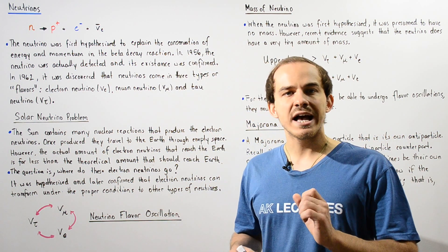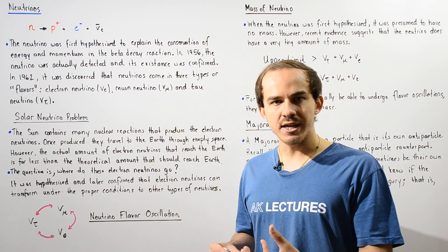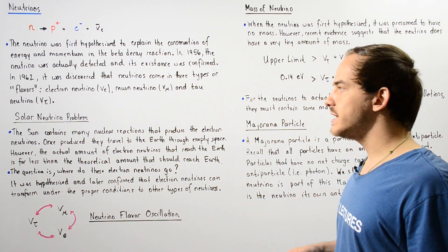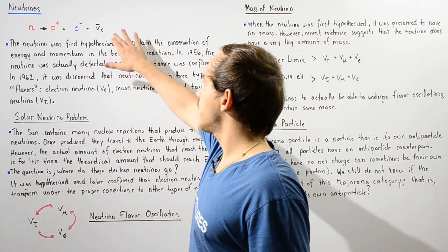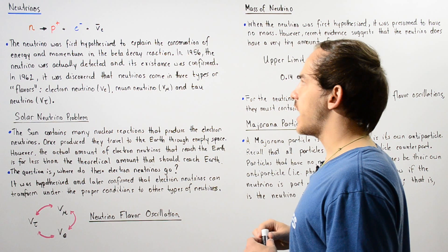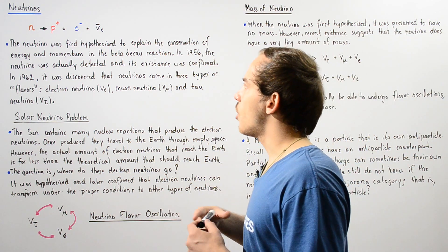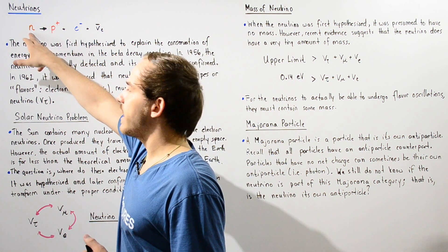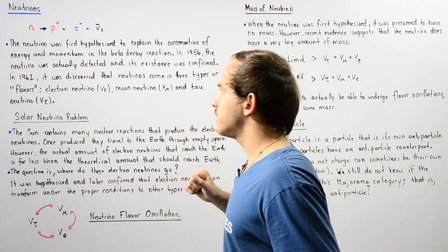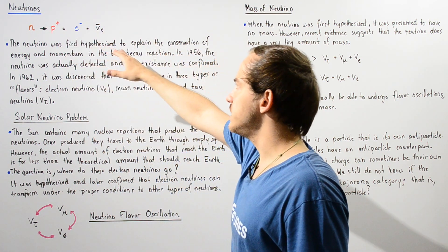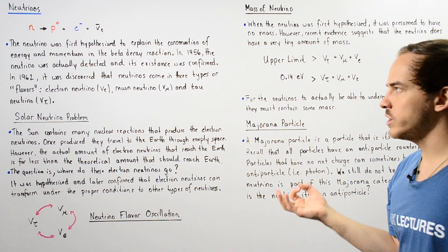The neutrino also has no charge, and so that means it doesn't feel any type of electric or magnetic force. Let's take a look at the following nuclear reaction, the following interaction that takes place between particles. We have a neutron that basically decays into a proton, an electron, in the process releasing some type of neutrino.